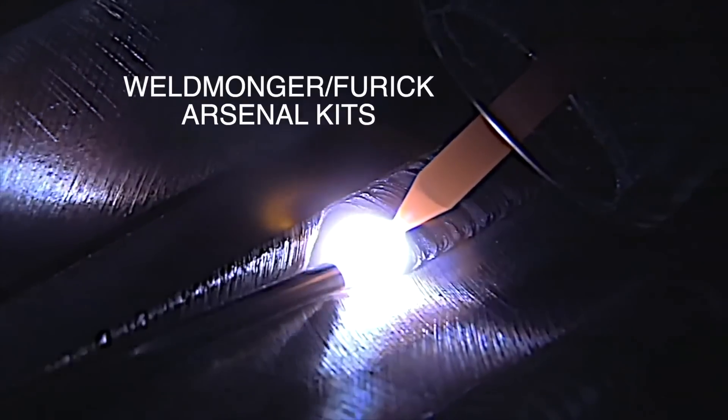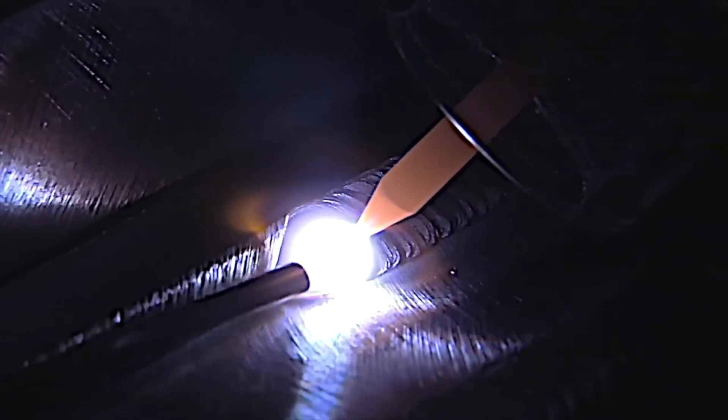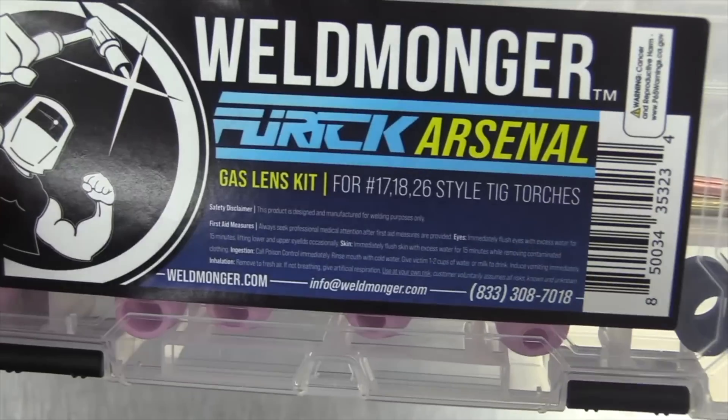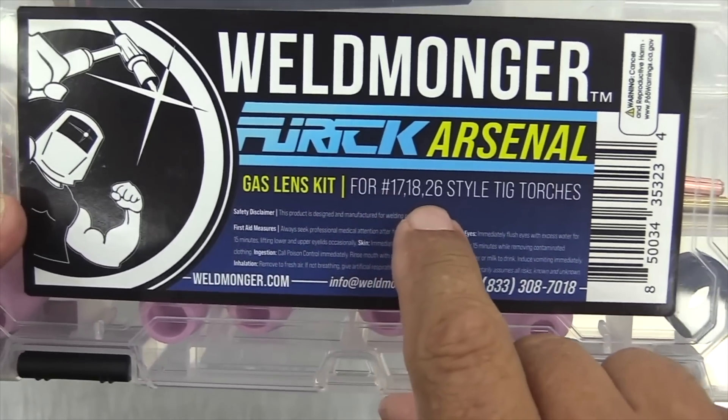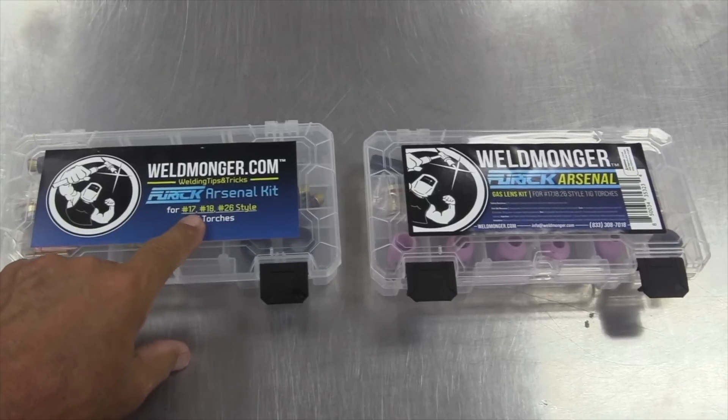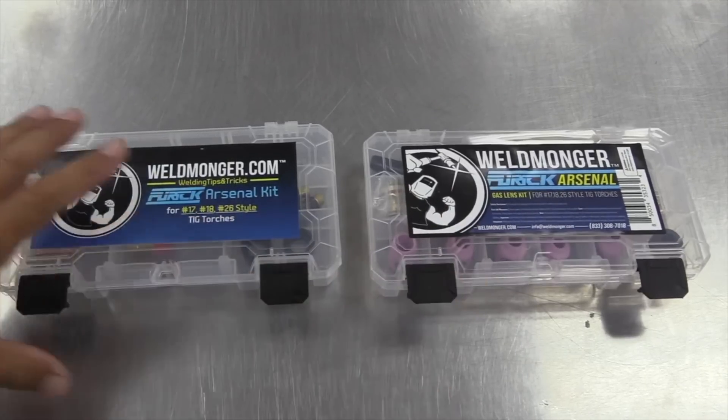I want to take a minute and show you some of the changes we've made to one of our most popular TIG kits. Trying to add value without adding cost. It's the Weldmonger Furek Arsenal kit, a very popular kit. This one is showing the one for 17, 18, and 26 style torches. We also have them for 9, 20 style torches.